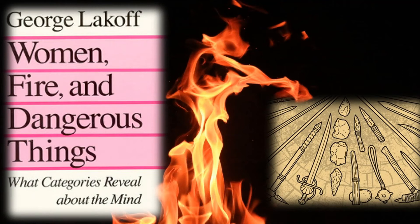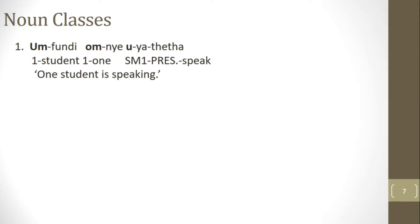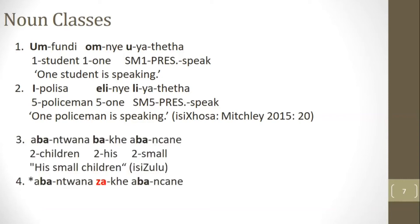There is no need to memorize all these noun classes — the point is just to be aware they exist. In isiZulu, to say 'one student is speaking,' a student is noun class 1 marked by prefix um, glossed as NC1. The numeral umunye is prefixed by an agreement morpheme for noun class 1, and the verb is prefixed by u — subject marker for noun class 1, SM1. In contrast, policeman happens to be noun class 5, with prefix eli on the numeral and li on the verb. One cannot substitute one agreement form for another — that would produce strong ungrammaticality.